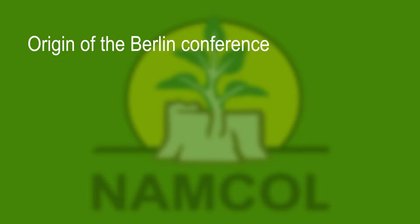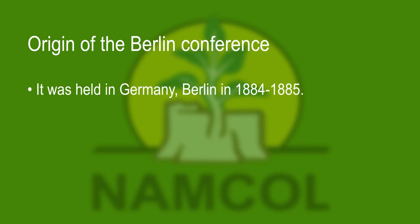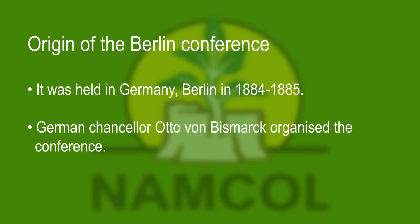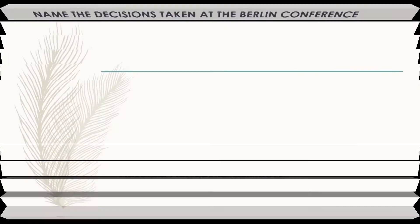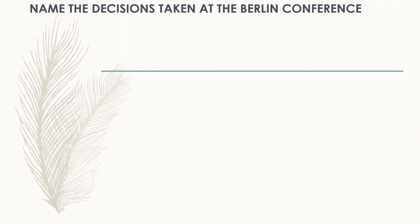We are going to start with the origin of the Berlin Conference. It was held in Berlin, Germany, in 1884 to 1885. Berlin is the capital city of Germany. German Chancellor Otto von Bismarck organized the conference. It was attended by Germany, Austria, Belgium, Luxembourg, Denmark, Spain, USA, Britain, Italy, Holland, Norway, and Turkey.